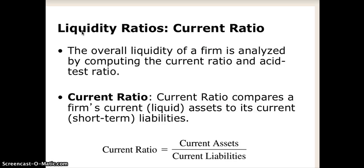The first one is the current ratio. The current ratio takes the current assets of a company over the current liabilities. So if a company has $100 in assets and $50 in current liabilities, it would have a current ratio of two. This information is extracted from the balance sheet in terms of the trio of financial statements we've reviewed.